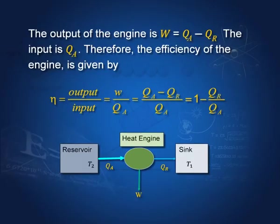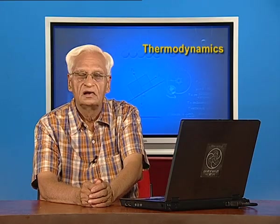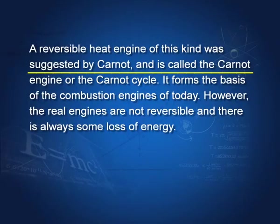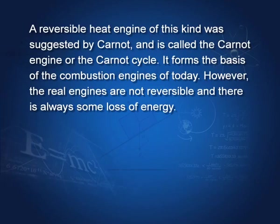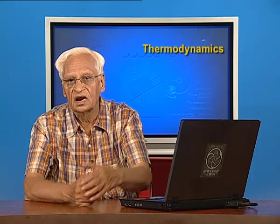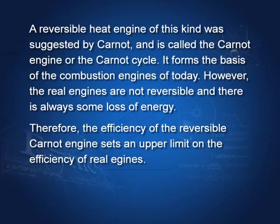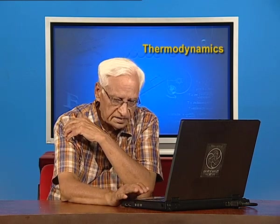We shall put this formula in a more acceptable form. A reversible heat engine of this kind was suggested by a scientist called Carnot, and therefore it is known as the Carnot engine or Carnot cycle. It forms the basis of combustion engines today — the engines used in trains and other machines are all based on the Carnot engine. The efficiency of the reversible Carnot engine sets an upper limit on the efficiency of real engines, because in the Carnot engine there is no loss of energy — it is ideal and reversible, giving maximum efficiency. All real engines have efficiency less than that of the Carnot engine.